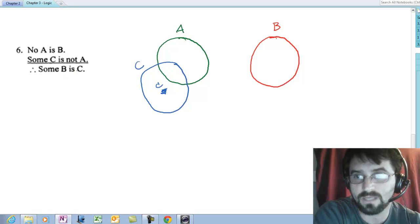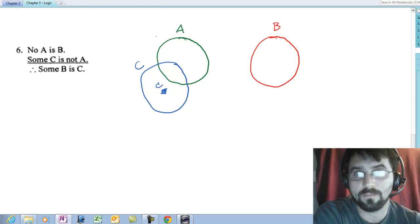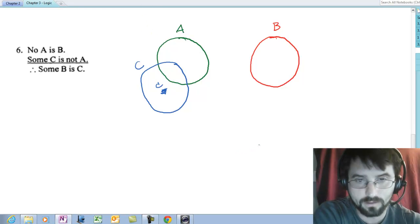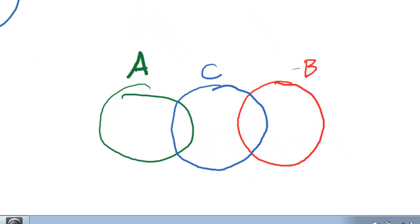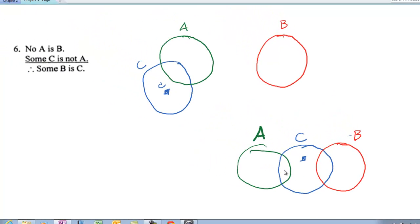Some B is C. Well, even how I drew it right there, that's not in the picture, right? C and B do not have to overlap. And even if I drew them overlapping, the only place I know for sure is not empty is that there is a C that is not A. So that C that is not A could be here or it could be there, but it doesn't have to be here. So I'm not going to draw it there. Either one of these two pictures would disprove this conclusion.